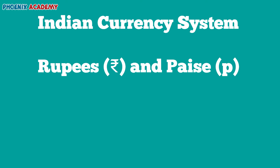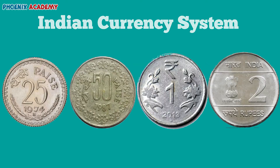Generally, coins are found in the denominations of 25 paisae, 50 paisae, 1 rupee, 2 rupee, etc.